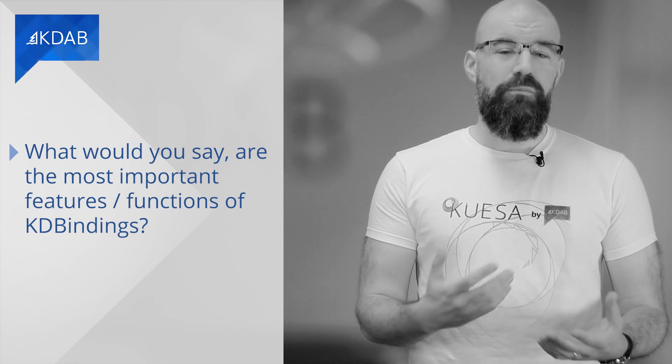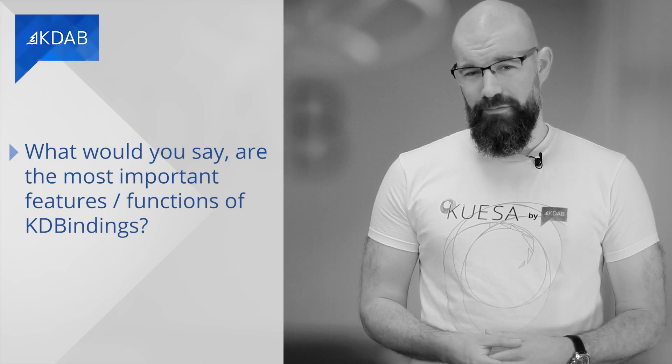What would you say are the most important features or functions of KDBindings? In my opinion, the really headline feature is that we actually managed to get properties and especially data binding working in pure C++, which means that you can write very expressive code that gets re-evaluated whenever necessary. Whenever any of your input data changes, you then automatically redo all the calculations based on that input data, and it will update everything in your code base that relies on this input.